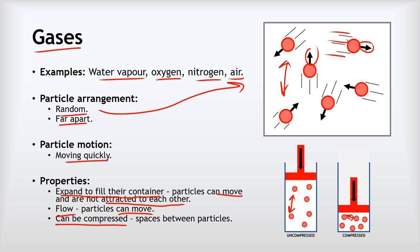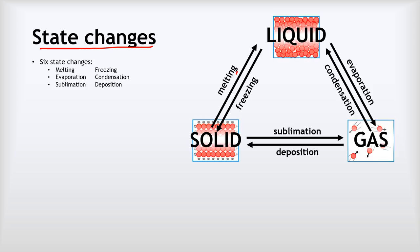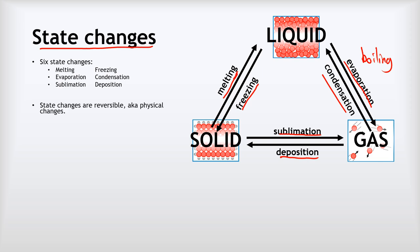State changes occur when substances change from one state to another — there are six of these. Melting is when a solid becomes a liquid; freezing is when a liquid turns back into a solid. When a liquid becomes a gas we call that evaporation, sometimes called boiling. A gas turning back to a liquid is condensation. When a solid turns straight into a gas that's sublimation; a gas turning straight back into a solid is deposition. These state changes are all reversible, which is why we often call them physical changes — no new substance is being made.